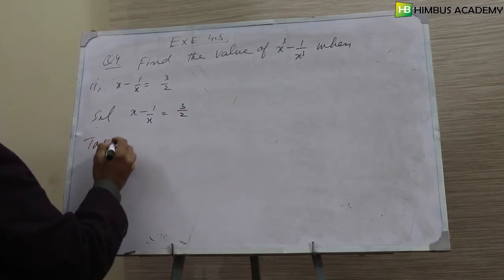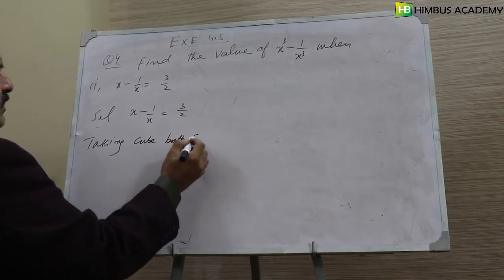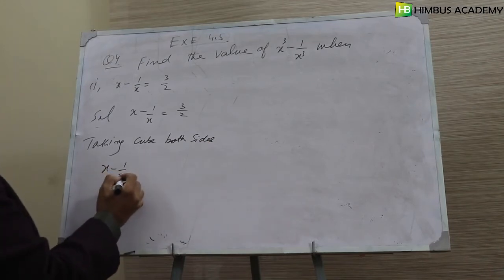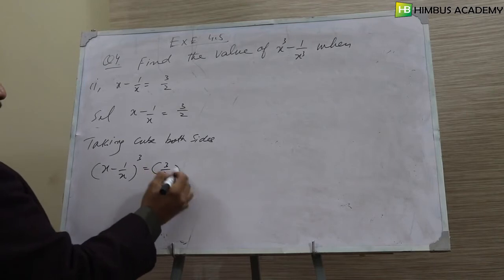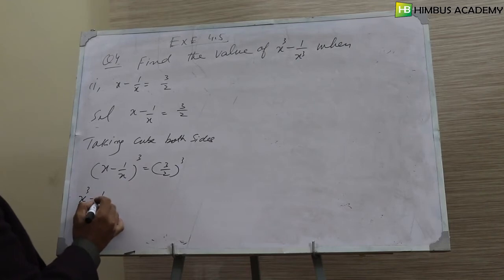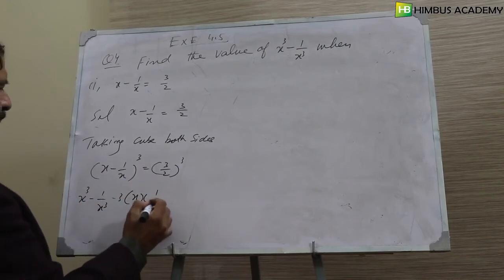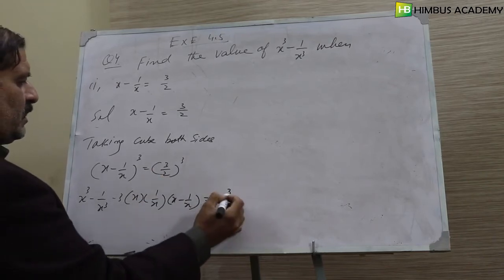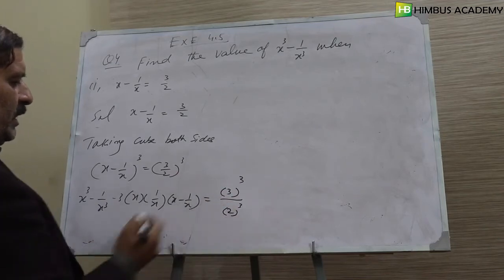Taking cube both sides. x minus 1 over x whole cube equals 3 over 2 whole cube. This expands using the formula a cube minus b cube minus 3ab into a minus b. And 3 cube over 2 cube on the right side.